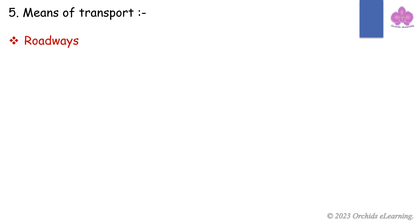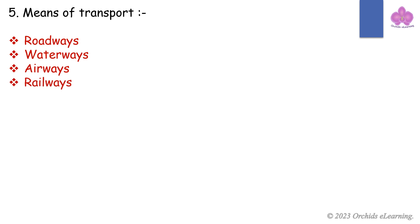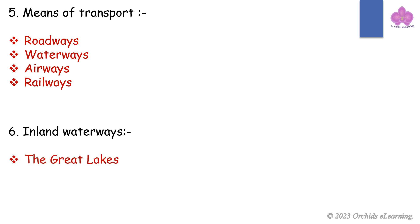Means of transport: roadways, waterways, airways, railways. Inland waterways: the Great Lakes, the Nile, the Amazon, the Rhine.